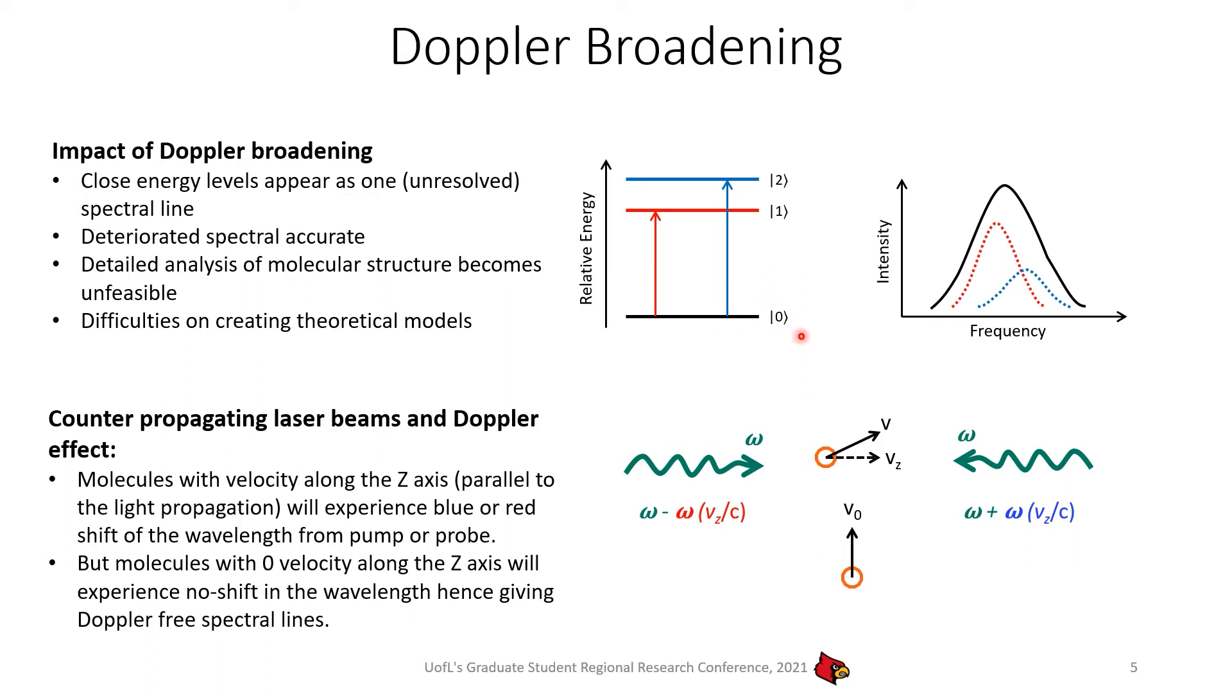What are the impacts of Doppler broadening? Suppose we have a ground state zero and two excited states one and two, and they are relatively close. If we plot our spectral line intensity versus frequency, we will see because the excited state one and two are very close, the transition from ground state energy will be close also. That's why in the frequency domains, we will have two peaks very close to each other. But due to the Doppler broadening, instead of seeing these two distinct peaks, we will see one big broadened line and we will not be able to resolve these two close energy levels. This will also deteriorate our spectral accuracy and the ability to do detail analysis of the molecular structures, which will eventually create difficulties on creating theoretical models for the molecules.